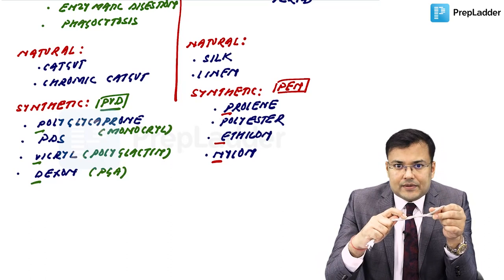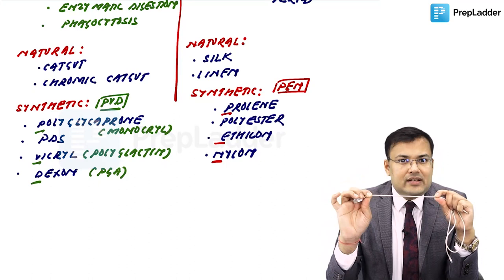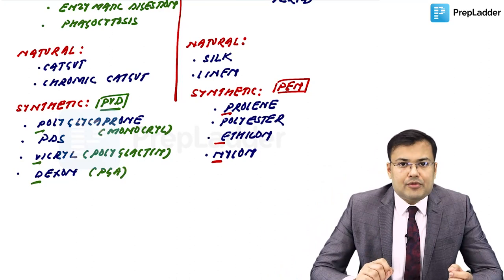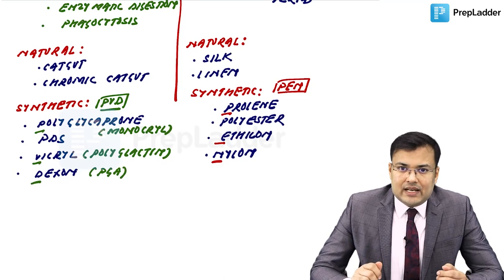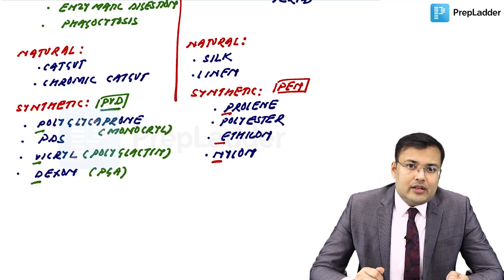Because of crevices in polyfilament sutures, there is an increased risk of infection. Monofilament sutures have no crevices, so they are associated with decreased risk of infection. However, monofilament suture knots are less stable, so we take six to eight knots. In polyfilament sutures, knots are more stable and three to four knots are sufficient.